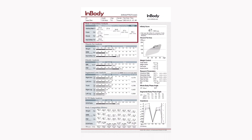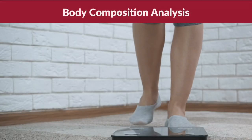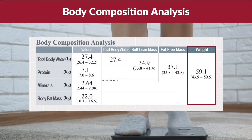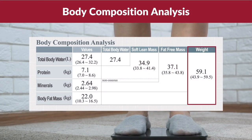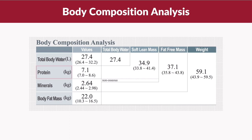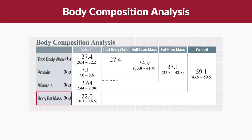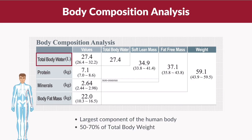Starting from the top of the result sheet, we have the body composition analysis. If you look at the right side of the section, you are going to see your total body weight. Your total body weight is actually made up of four different compartments: body water, protein, minerals, and body fat. Water is the largest component of the human body, making up approximately 50 to 70 percent of total body weight.